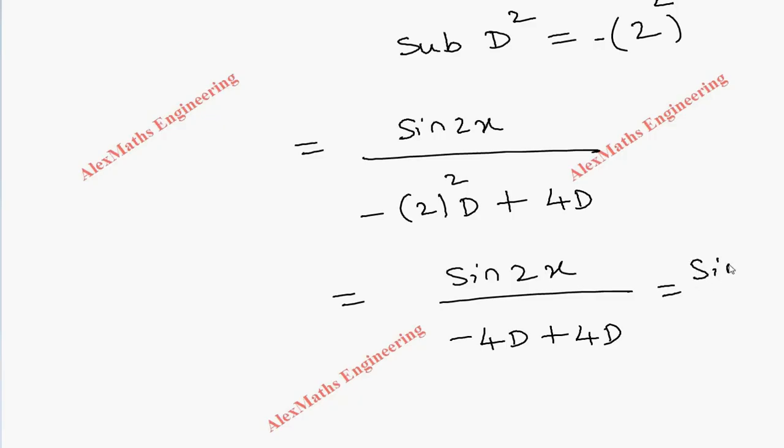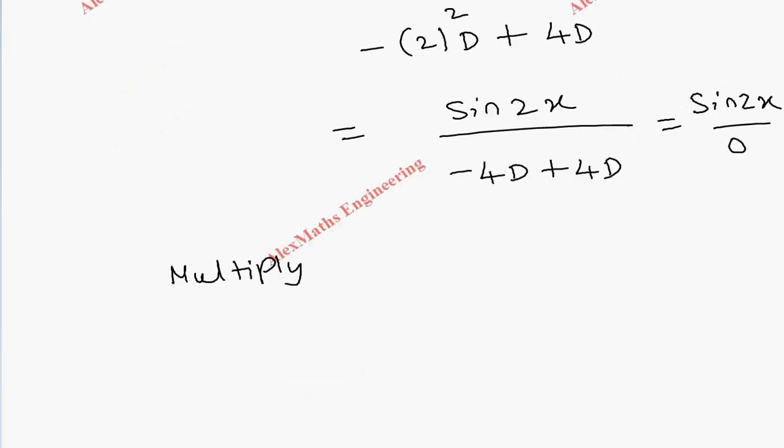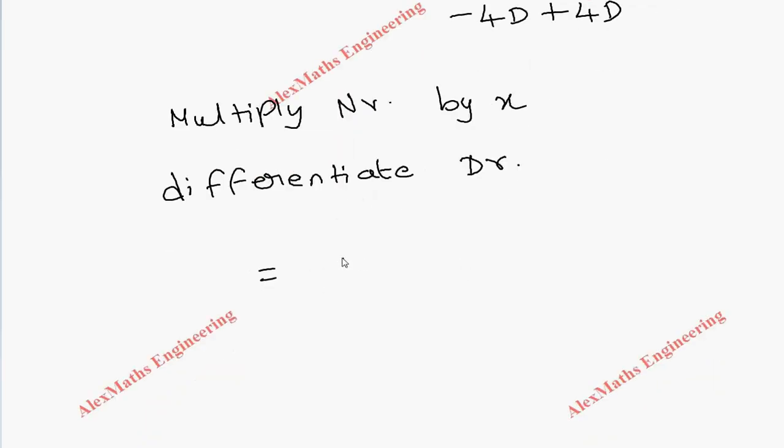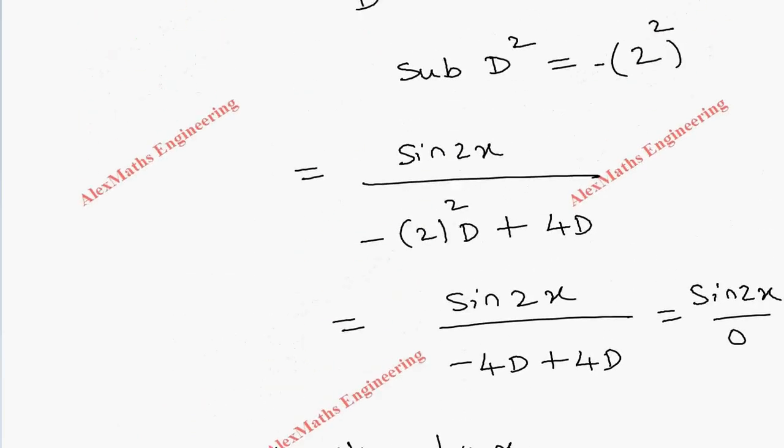When denominator becomes 0, as per the procedure, we have to multiply numerator by x and we have to differentiate the denominator. So x·sin(2x) divided by differentiation of denominator is 3D² + 4.